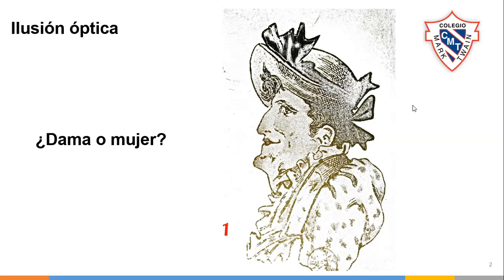¿Pero a qué se refiere con dama? Recuerden que en el siglo XIX, XVIII, se utilizaba este término como sinónimo, pero para distinguir a las mujeres dentro de estas clases sociales, distinguían como mujer o dama. Dama era una mujer que tenía cierta clase social alta. En realidad debe de ser dama o sirvienta, que debe ser el término correcto. Pero hoy no se llama así, tiene otro nombre.